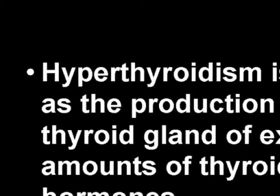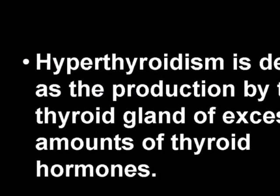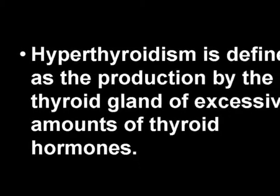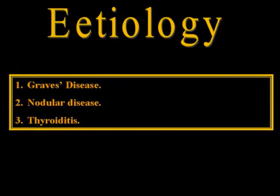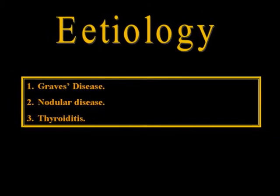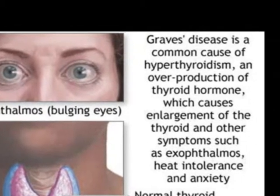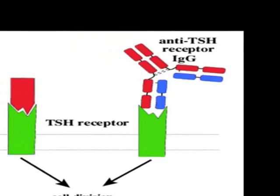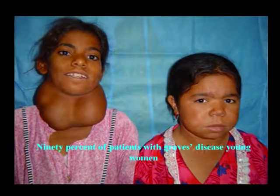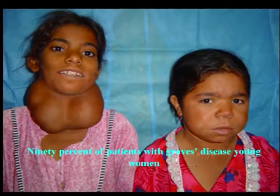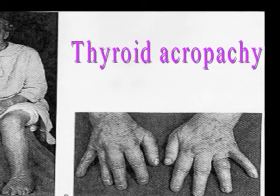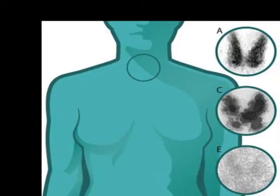Hyperthyroidism is defined as the production by the thyroid gland of excessive amounts of thyroid hormones. Thyrotoxicosis refers to the clinical syndrome associated with prolonged exposure to elevated levels of thyroid hormone. Hyperthyroidism is a disorder of various etiologies. First, Graves' disease, which is the most common cause of thyrotoxicosis. It is an autoimmune condition resulting from production of an abnormal immunoglobulin able to occupy the TSH receptor on the thyroid follicular cell, where it may mimic the effect of TSH, causing cell division and stimulating thyroid hormone secretion.